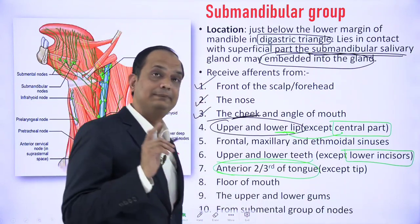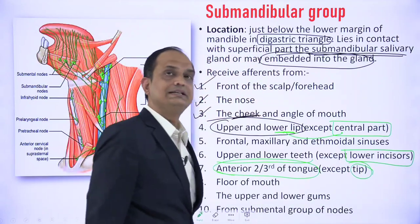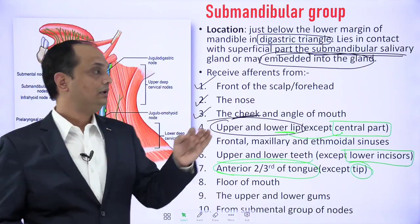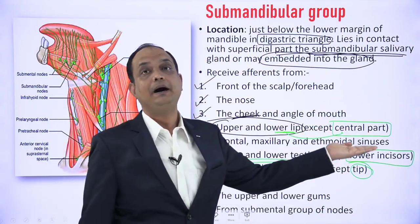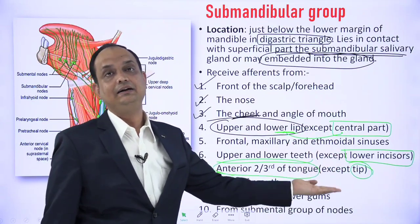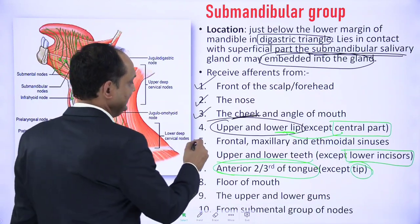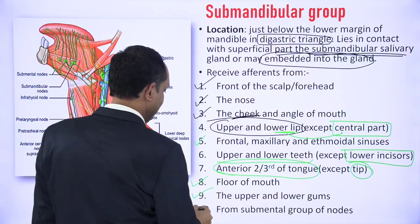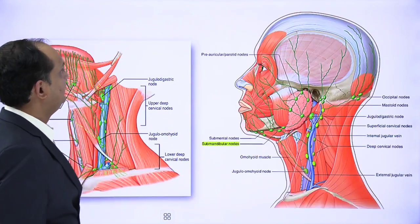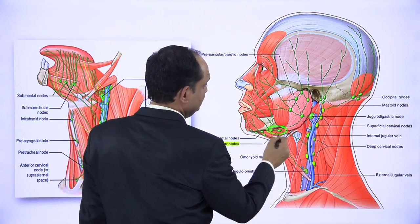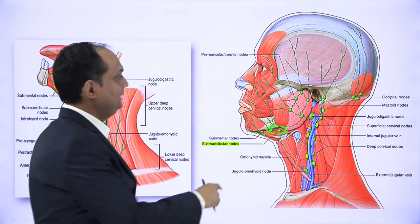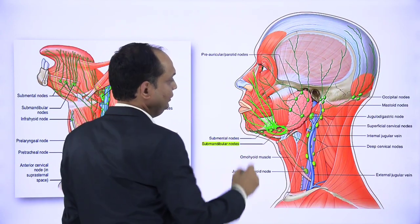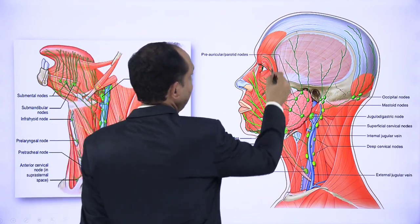The three areas to exclude from submandibular drainage are: central part of lower lip, lower incisors, and tip of tongue. The submandibular group also drains the frontal, maxillary and ethmoidal sinuses, the floor of mouth, upper and lower gums, and receives drainage from the submental group. In the diagram, the submandibular lymph nodes in the digastric triangle receive the lateral nose, upper lip, angle of mouth, lower lip (except center), and some input from the forehead.